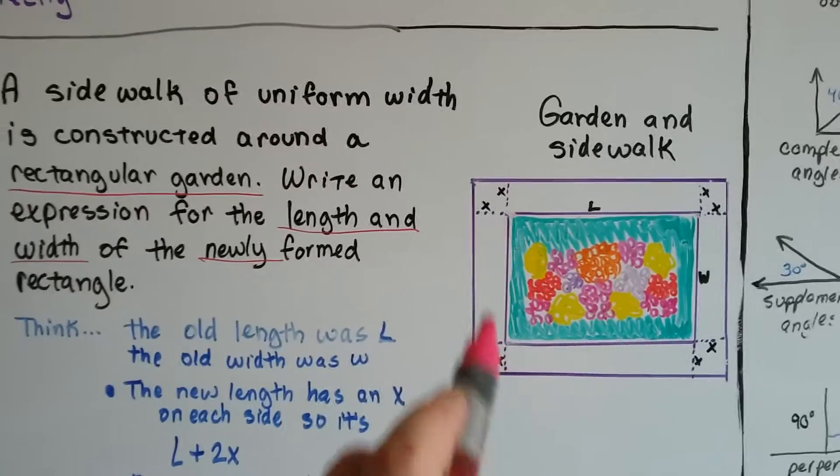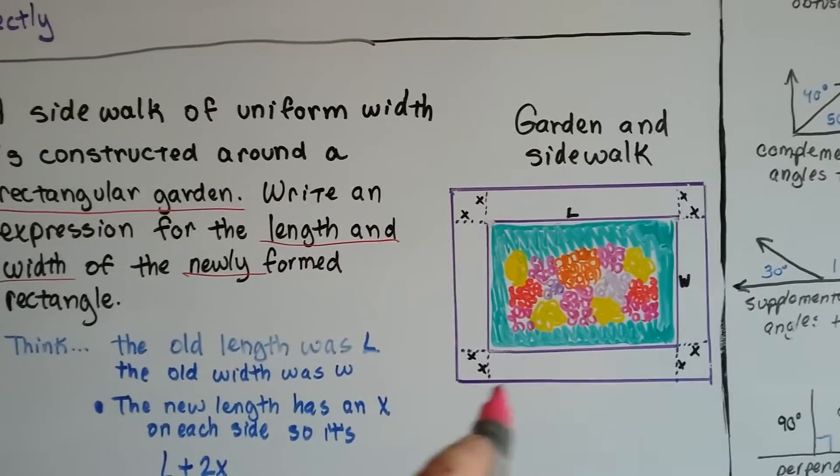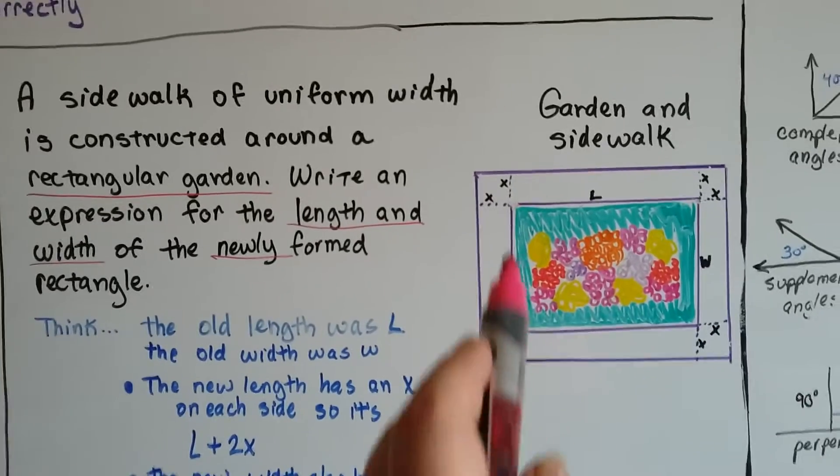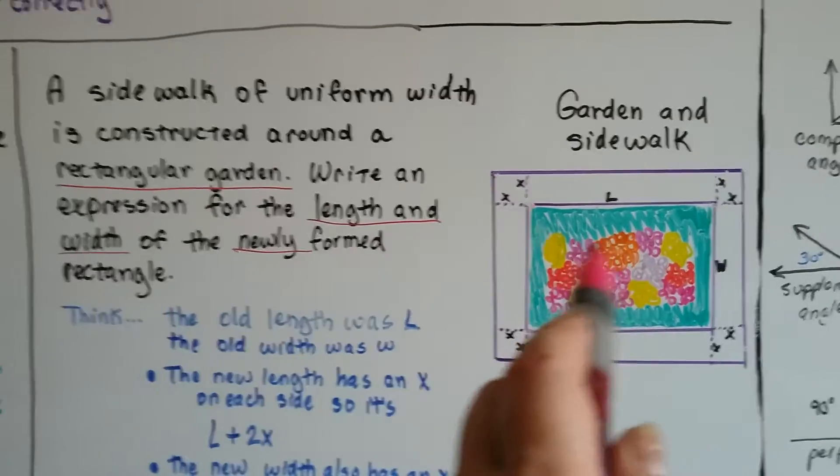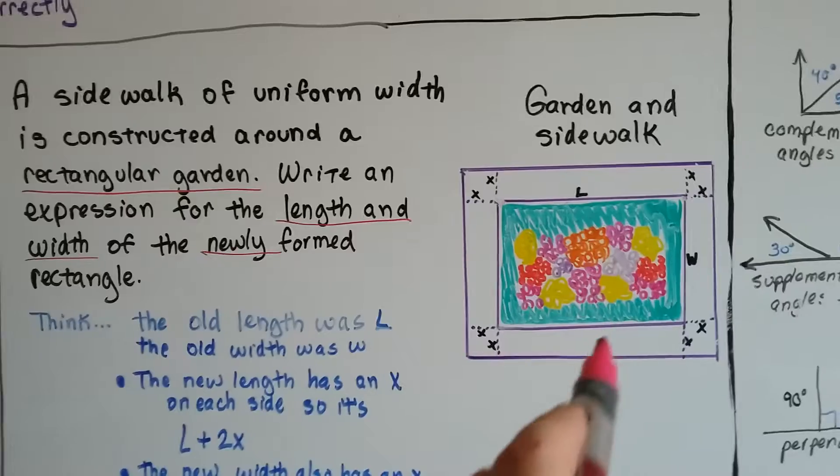So the first thing I did was I drew a picture, so I can get a graphic image of what's going on. So I drew the garden. I went a little overboard maybe, but I like to color.